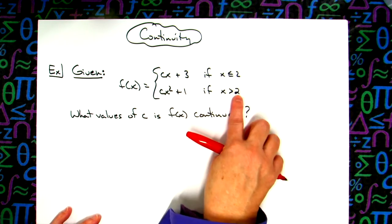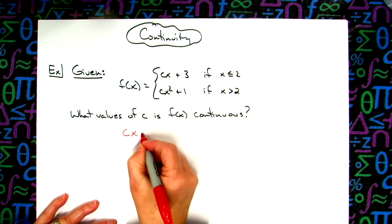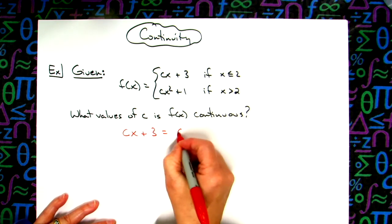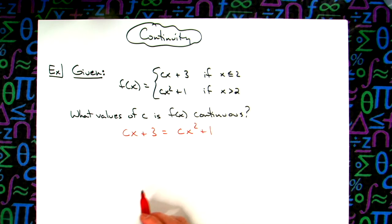So what I'm going to do here is I'm going to write out cx plus 3 is equal to cx squared plus 1. I've got x in there, I'm trying to figure out for what values of c, so I need to place values of x here.